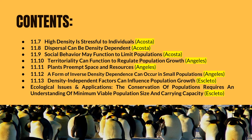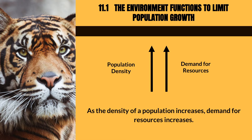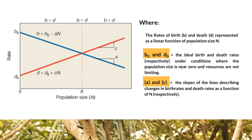The following are the order of topics to be discussed. The presentation will be divided into four parts. Section 11.1: The Environment Functions to Limit Population Growth. As the density of a population increases, the demand for resources also increases. Shrinking resources results in increased mortality, decreased fecundity, or both. The simplest form of representing changes in birth rates and death rates with increasing population is a straight line,